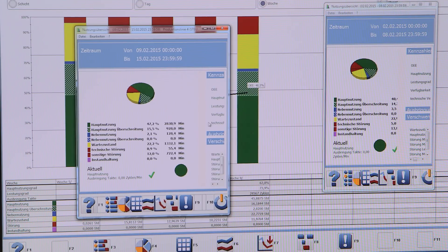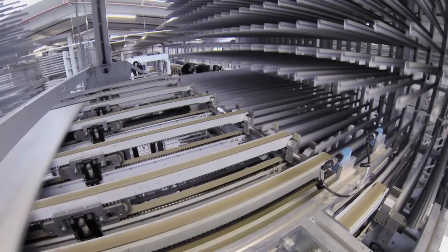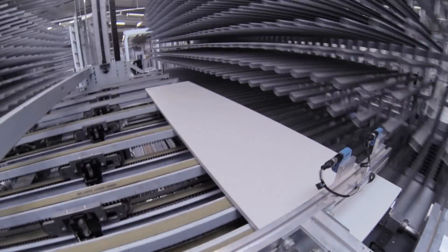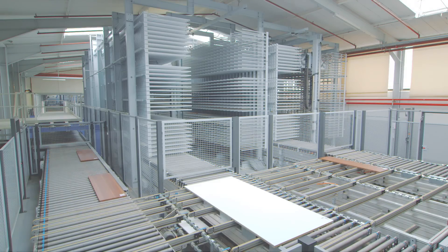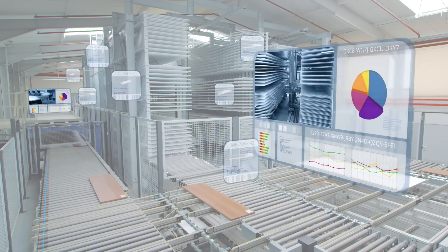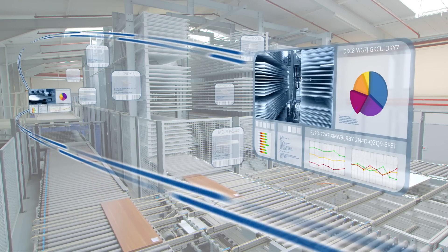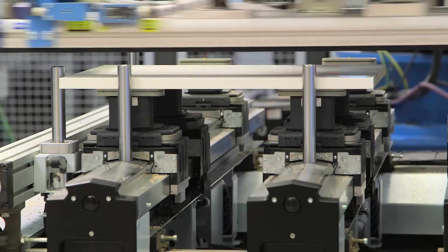The sorting memory plays a key role in network production. All components of a commission are compiled there and passed on together for final processing.